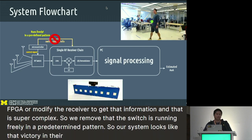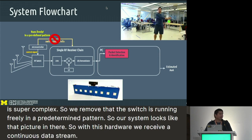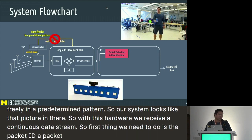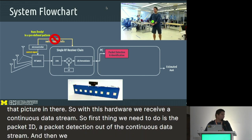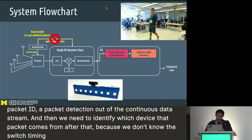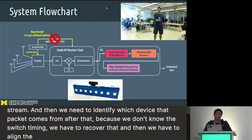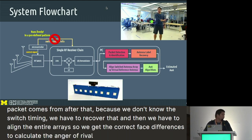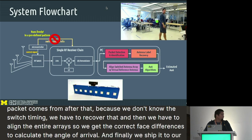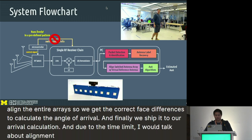With this hardware, we receive a continuous data stream. The first thing we need to do is packet detection from that stream. Then we identify which device each packet comes from. Because we don't know the switch timing — it's running on its own — we have to recover it. Then we align the antenna arrays to get the correct phase differences to calculate angle of arrival. Finally, we ship it to our angle of arrival calculation. Due to time limits, I will focus on alignment to the reference antenna; for the rest, please see the paper.